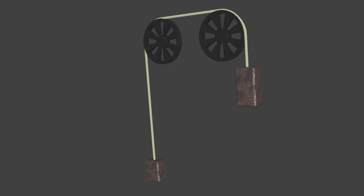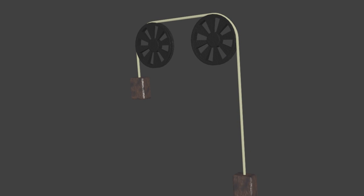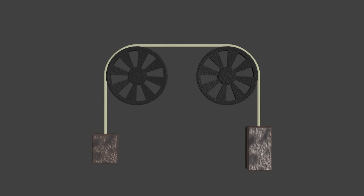When the system is released, the heavier mass goes down and the lighter mass goes up. Now let's look at the free body diagrams for these two masses. The same tension will be on both masses, so each has a weight. Remember, the pulleys only redirect forces.